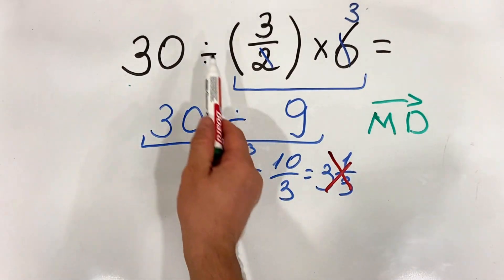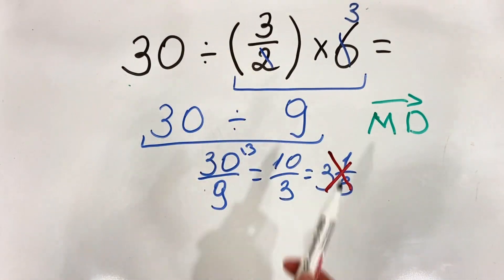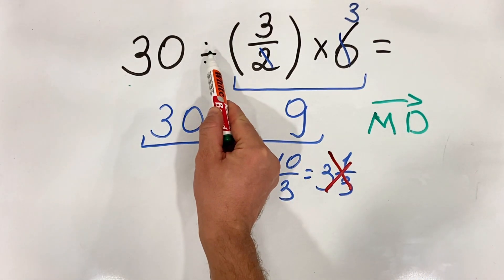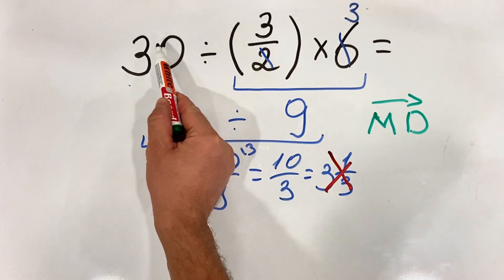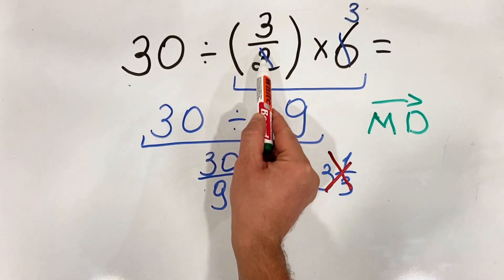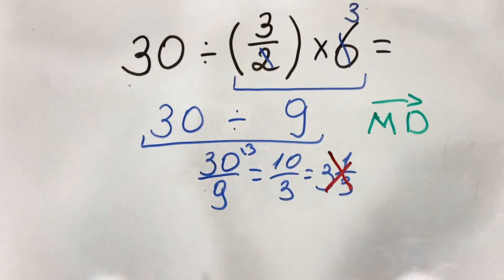We cannot do multiplication first and then division because this will entirely change the order of operations. In our case, first we do the division: 30 divided by 3 over 2, and then we multiply by 6.